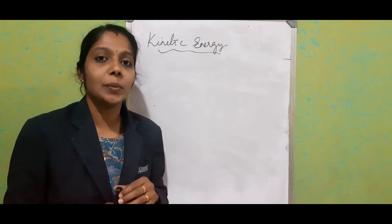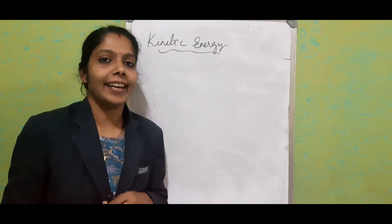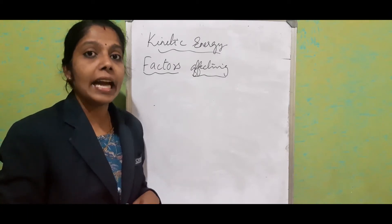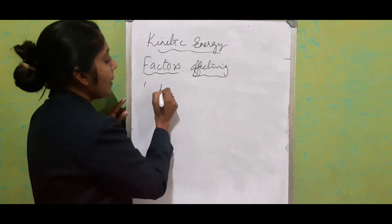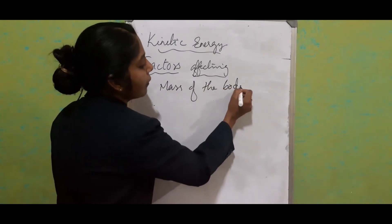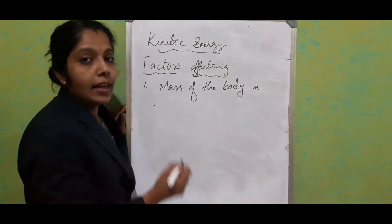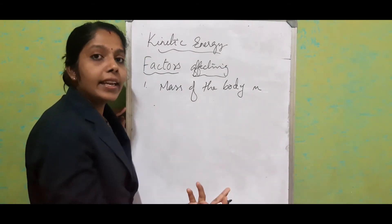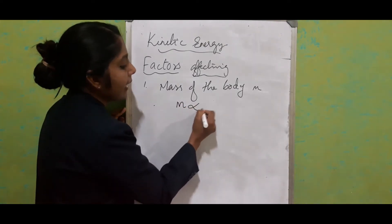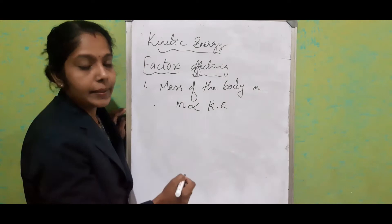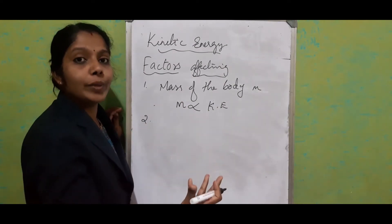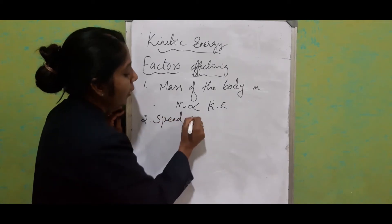Let's see the factors which are affecting kinetic energy. There are mainly two factors. The first one is the mass of the body. As the mass increases, the kinetic energy also increases — mass is directly proportional to kinetic energy. The second factor is the speed of the object, represented by the letter V.